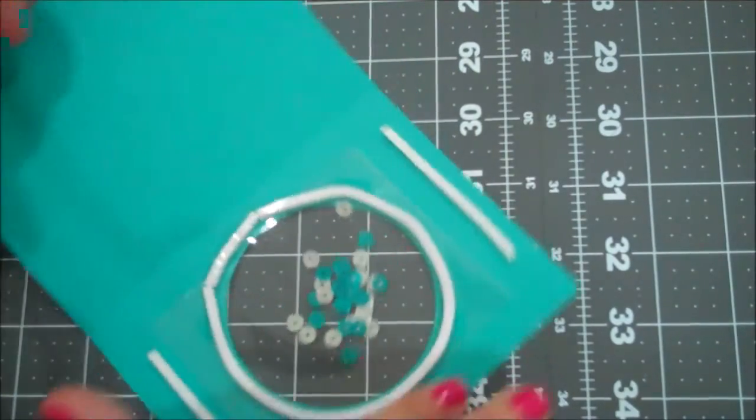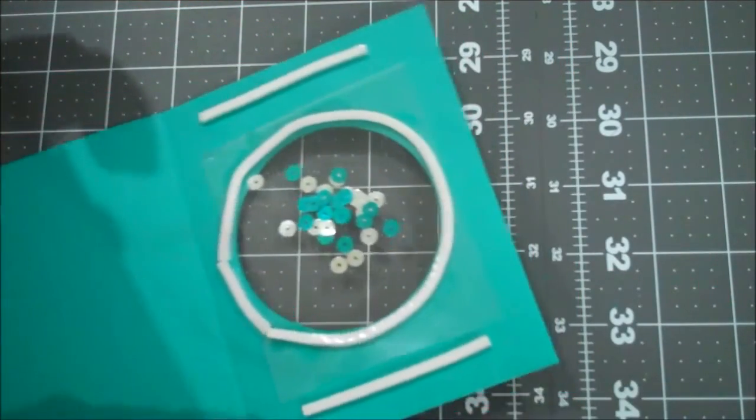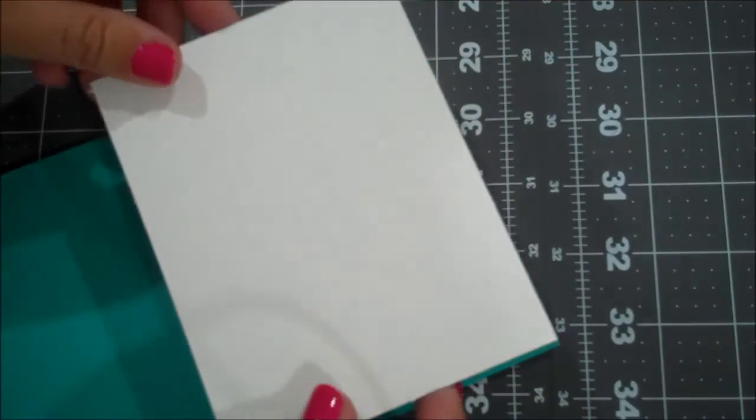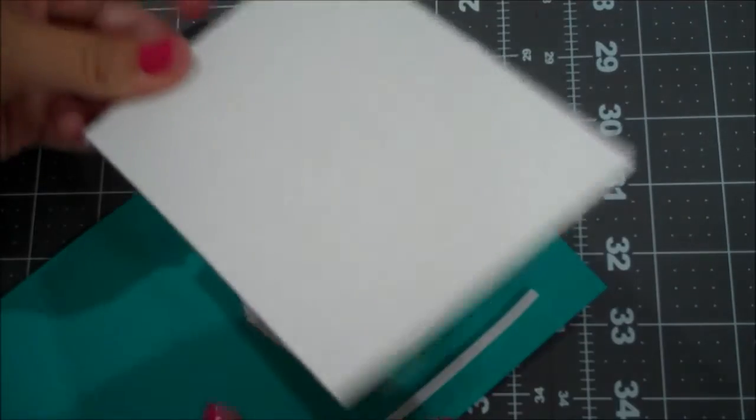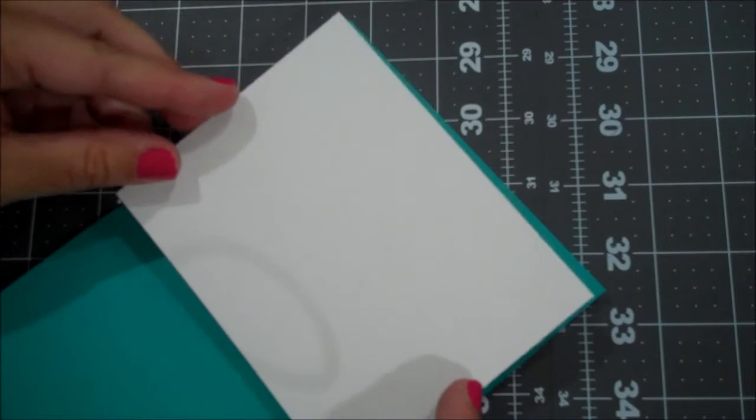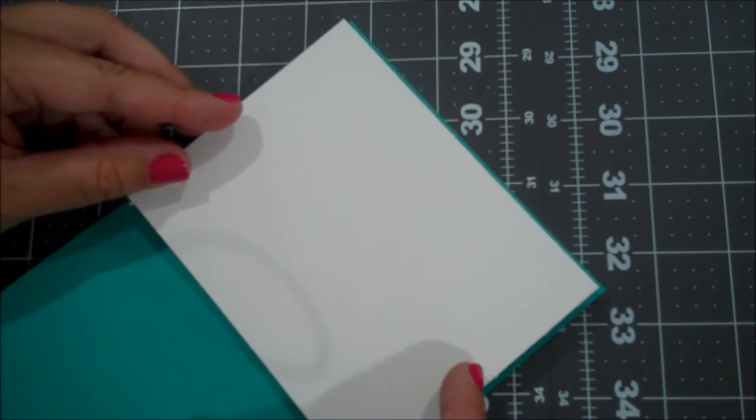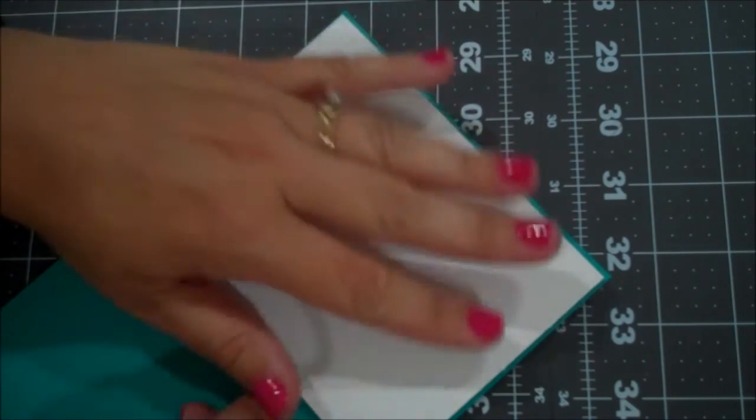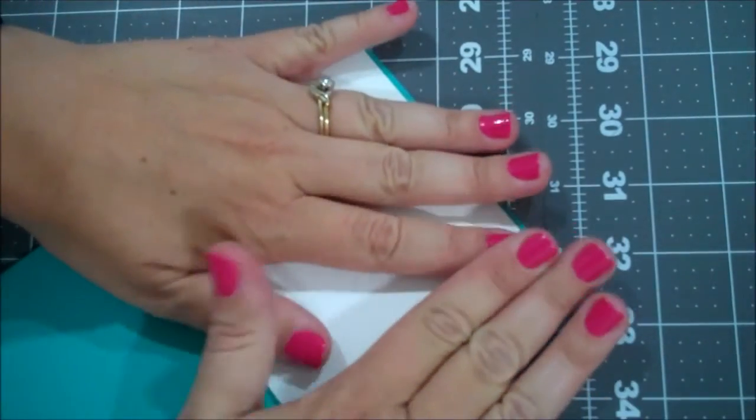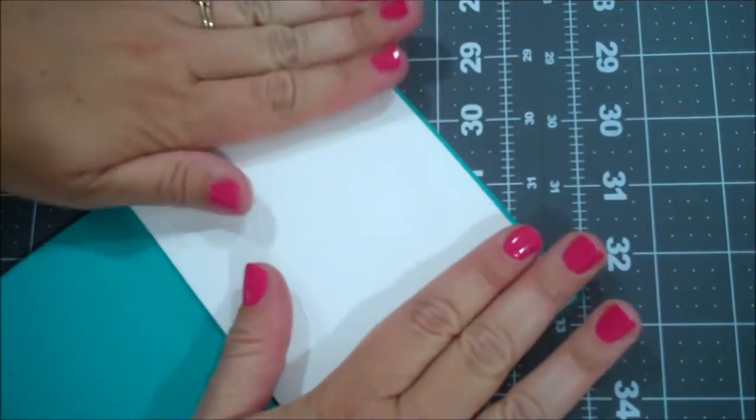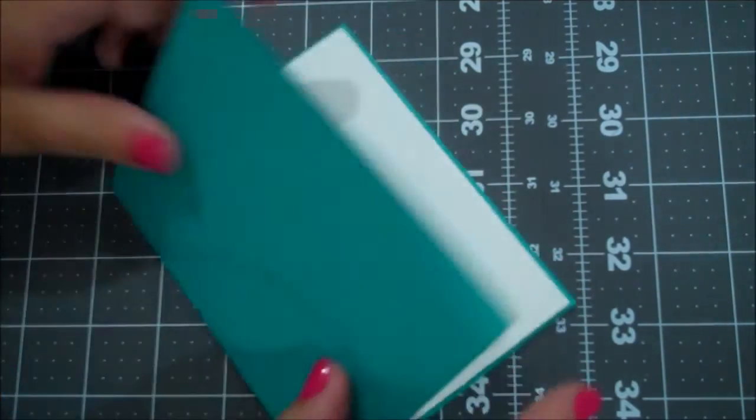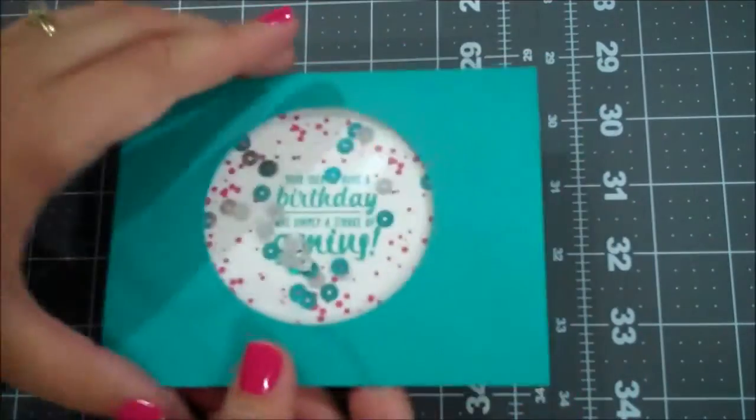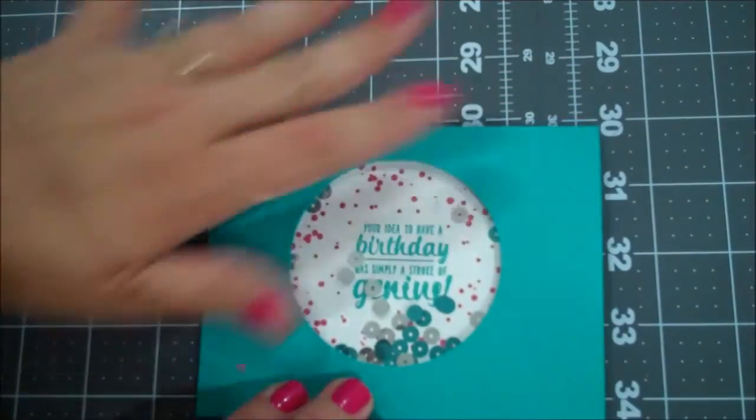Okay. And now let me just take a look here. This is going to be the front of my card. So when I close it, I want to make sure I'm putting this on correctly. That would be terrible if we mess that up now. Okay. So I'm going to lay that down and just give that a press. And there's our shaker. So much fun.